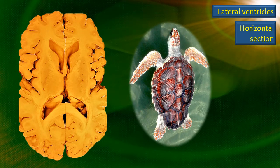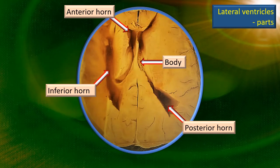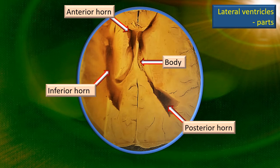This is just an interesting comparison. Here is a museum exhibit where the section is horizontal yet below the horizontal level. On one side, the temporal lobe has been dissected and you can see the full length of the inferior horn. Those are the parts of the lateral ventricle: body, anterior horn, posterior horn, and an inferior horn.